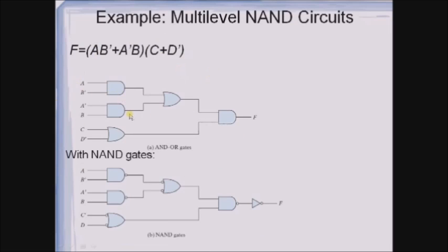Taking one more example: this circuit is the equivalent of the given expression, and we need to implement it using only NAND gates. Replace all AND gates with AND-invert symbols and OR gates with invert-OR symbols. Now check and compensate the bubbles: this bubble compensates this, and here there is a bubble receiving a complemented input, so a non-complement is produced. This remaining bubble is compensated with a NOR gate, and this NOR gate must be further implemented with the help of a NAND gate.